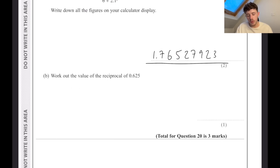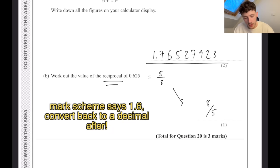Work out the value of the reciprocal of 0.625. With a calculator, put in the decimal and it's going to give you a fraction. So we know that is equal to 5 over 8. The word reciprocal means you flip it. So if we flip that, it's going to be 8 over 5.